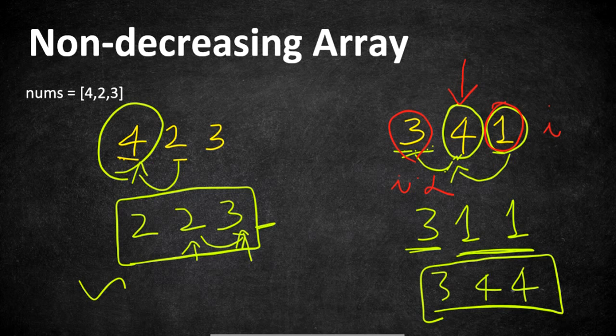If not, if the i-2 value is greater value then in that case updating the current number is the wise choice. By applying this logic we are going to count the number of modification we are going to make and if our modification exceeds 1 then we are going to return false. If not it is going to be true.